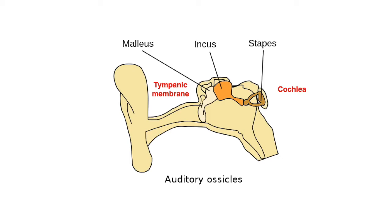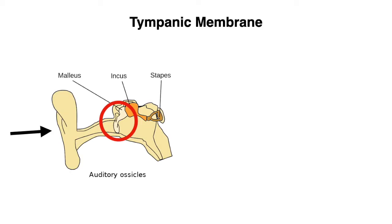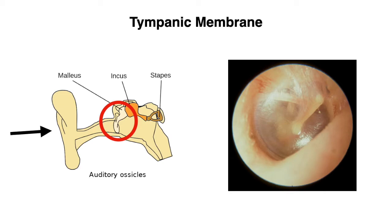Now that we've covered some basic anatomy, let's talk about what we're going to find when we look at somebody's eardrum. As the black arrow in this photo depicts, we're going to place the otoscope inside the ear. When we first look at any eardrum, we need to identify some important landmarks. First, you might notice a bony projection — that's actually the malleus that we've been talking about.